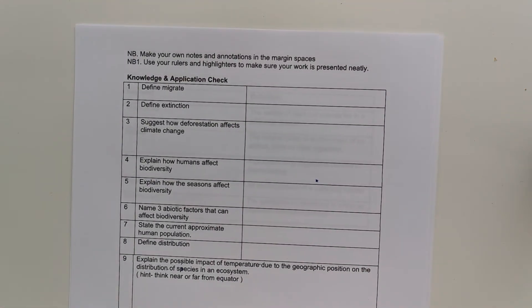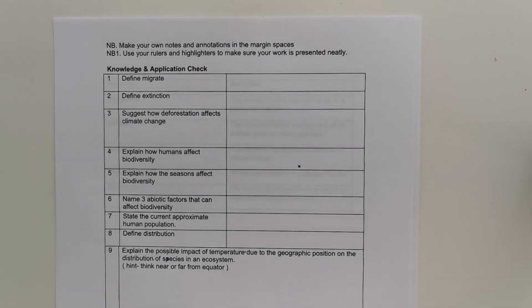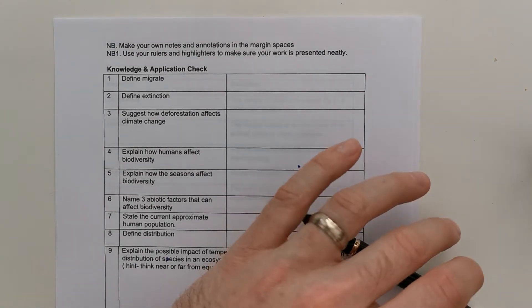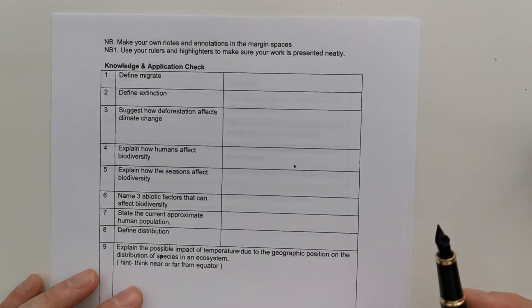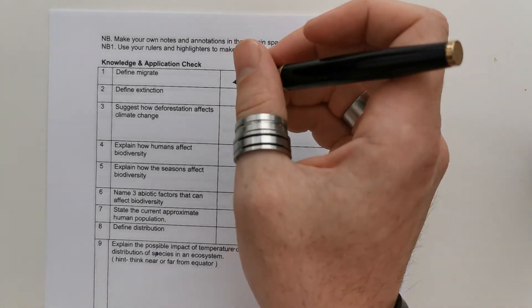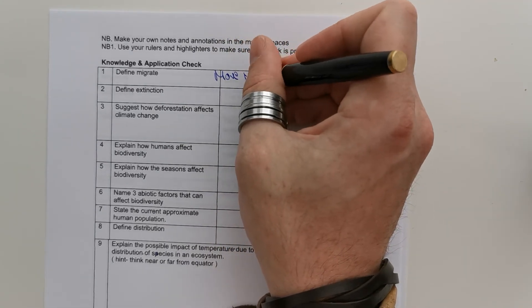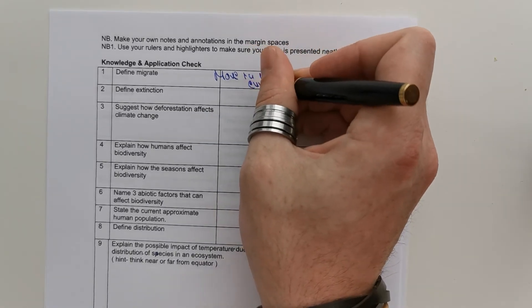So, your last task now is to take what you've done and have a look at it. Review your notes and have a go at the knowledge and application question at the end of this lesson. And just to try and confirm all the facts that you've managed to pick up. So, pause the video now and have a go at the questions and we'll go through the answers on that to finish. Define migrate. So, migration is when animals move environment in response to environmental change.